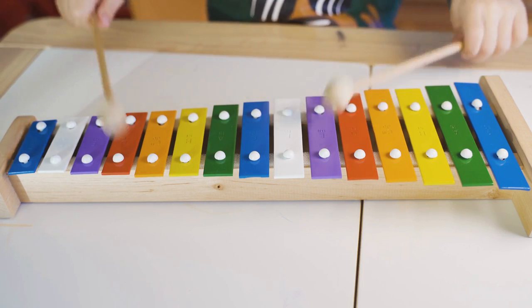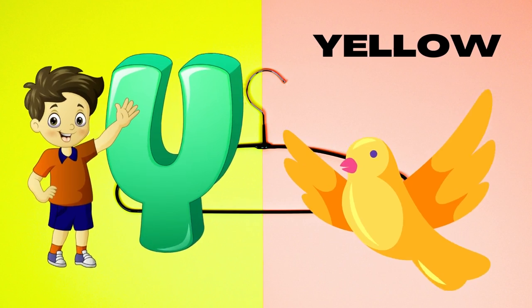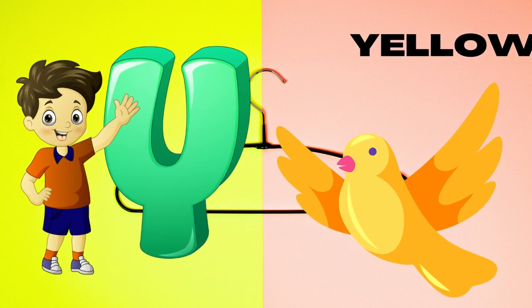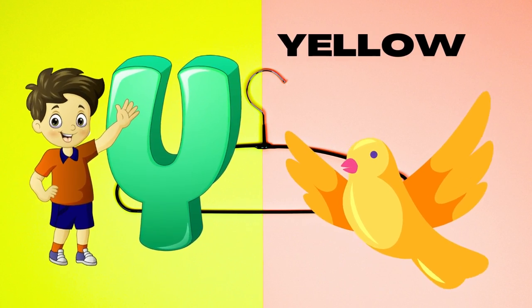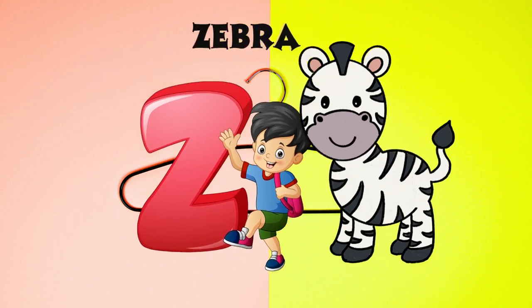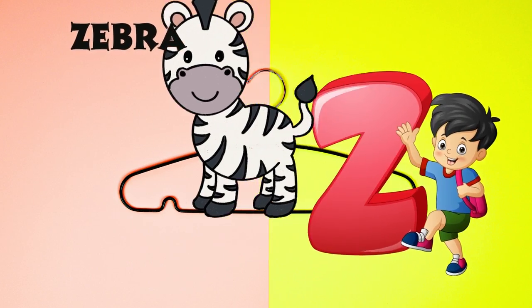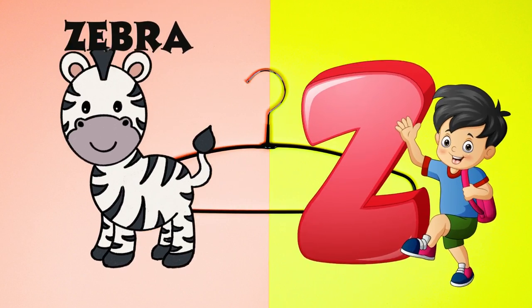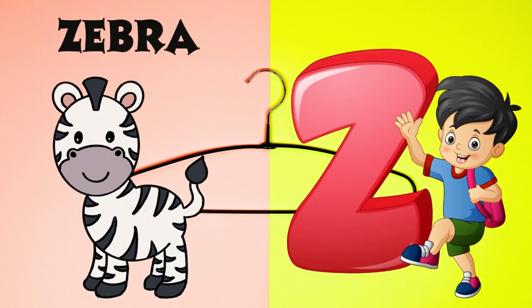Y is for yellow, y-y-yellow. Z is for zebra, z-z-zebra.